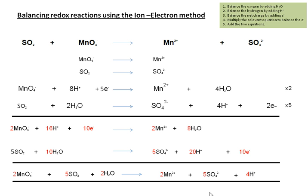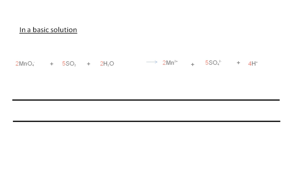To balance in a basic medium, we have to add OH⁻ on both sides of the equation. Because we have 4H+ on the right-hand side, we must add 4OH⁻ to cancel the H+ and create water. Adding 4OH⁻ on the right-hand side means we must also add 4OH⁻ on the left-hand side, because we must balance the equation on both sides.